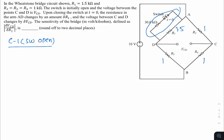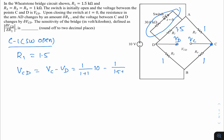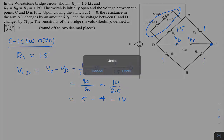With the switch open, R1 = 1.5 kΩ. Vcd = Vc − Vd. By voltage division: Vc = [1/(1+1)] × 10 = 5 V, and Vd = [1/(1.5+1)] × 10 = 10/2.5 = 4 V. Therefore Vcd = 5 − 4 = 1 V.